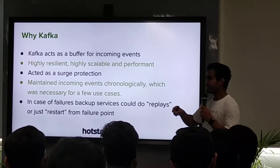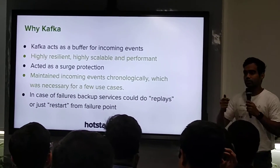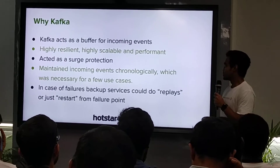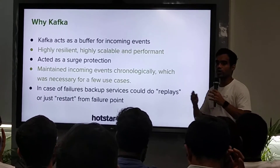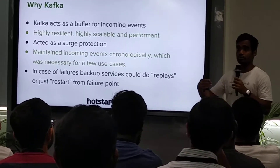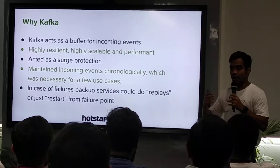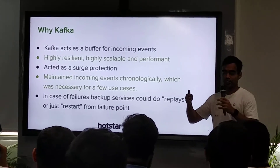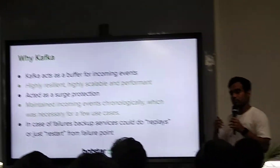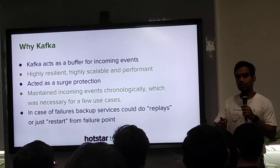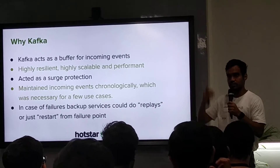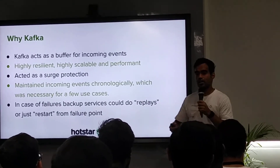Kafka also maintained incoming events in a chronological manner, which was important for two use cases. For Watch and Play, users give answers and we give scores and rewards such as cards from the last IPL. There will be some spoofing and hacking attempts. Kafka helped there as well — incoming answers were put into one partition per user, and since the order is chronological, we could discard all answers that came after the first answer. So Kafka helped prevent cheating there too.